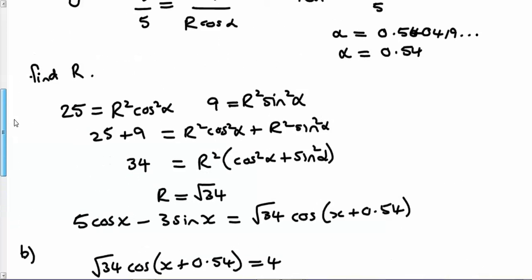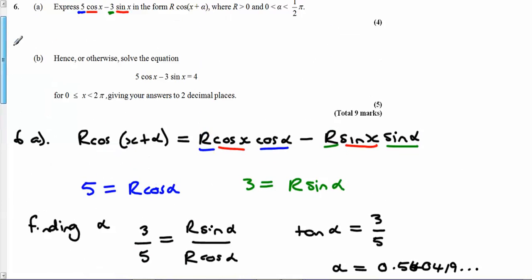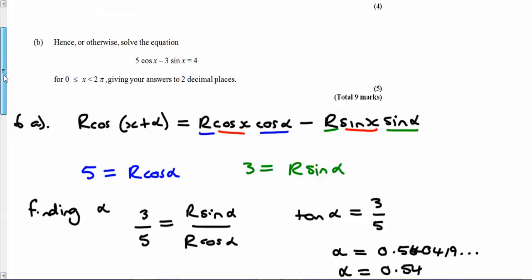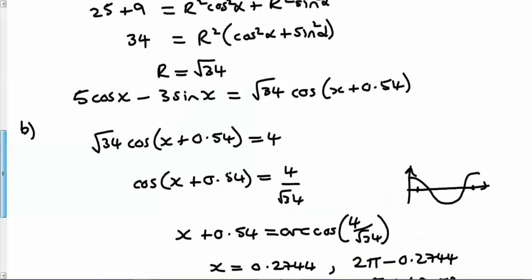The key bit to this question is understanding how you get your R cos alpha and your R sin alpha by comparing the expansion of this with what you're given at the start. And hopefully the rest seems to make some sense. Best of luck.